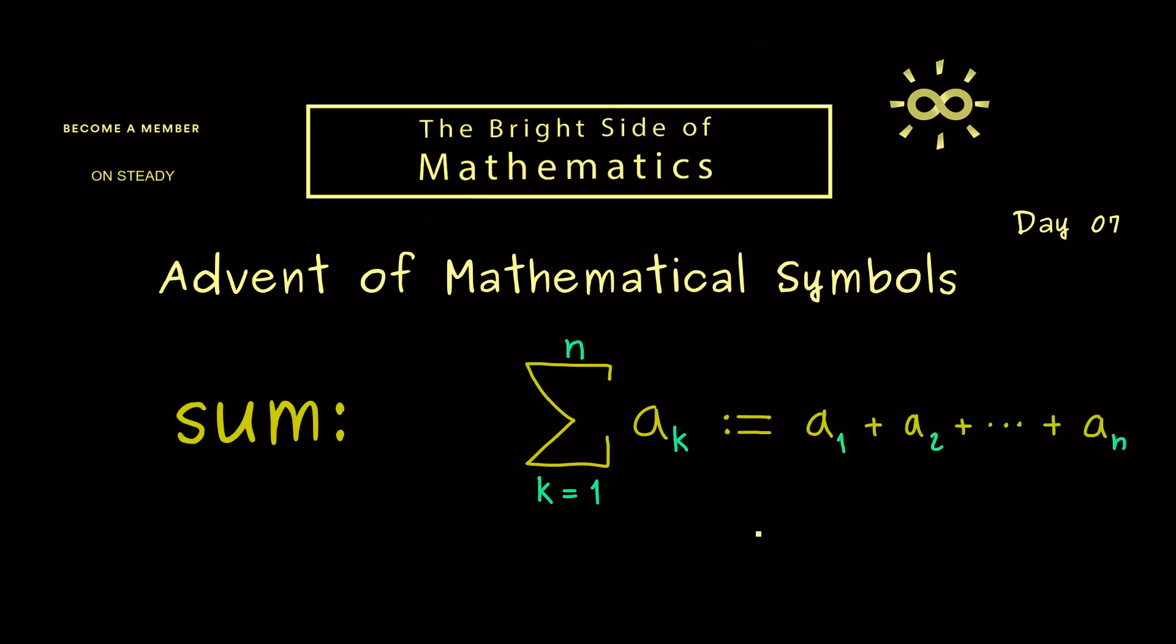This means that we start with the index given here, then we increase it by 1, do the addition, then we increase it by 1 again, do the addition again until we reach the value for the index given here. So this whole thing here should explain what the SUM symbol means.